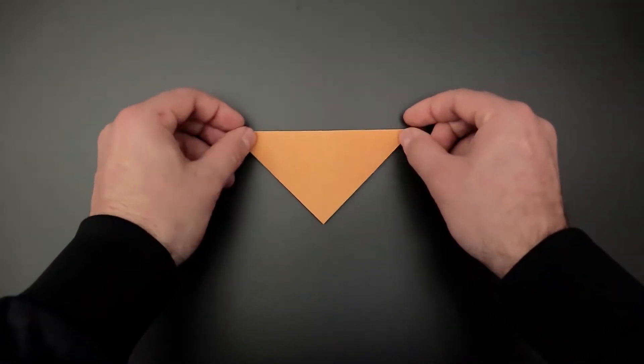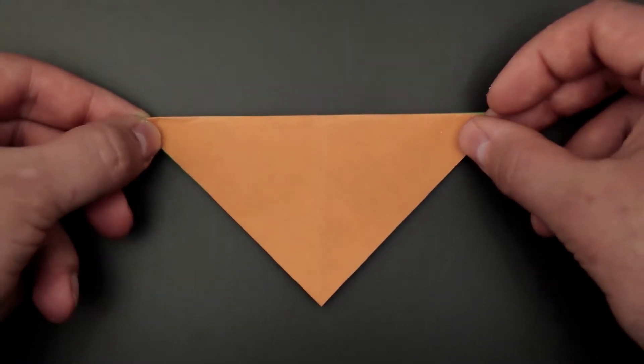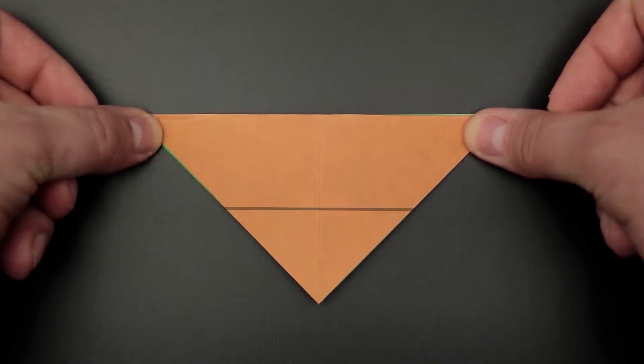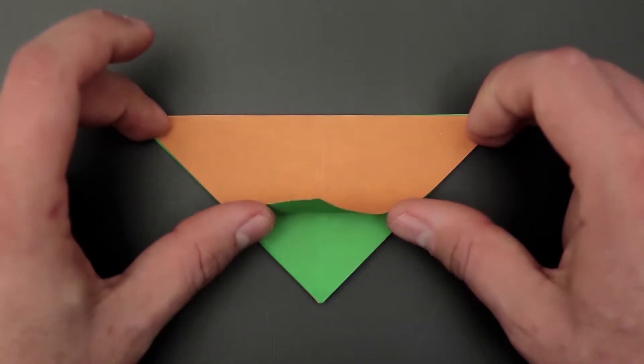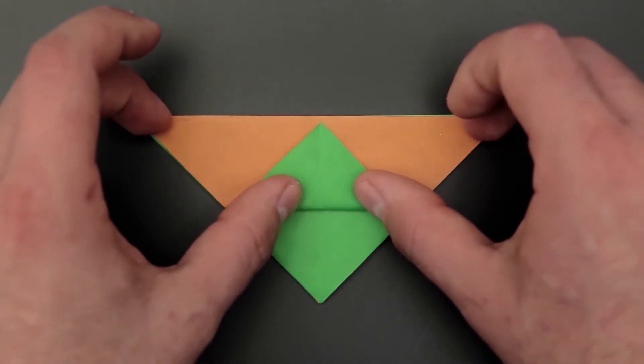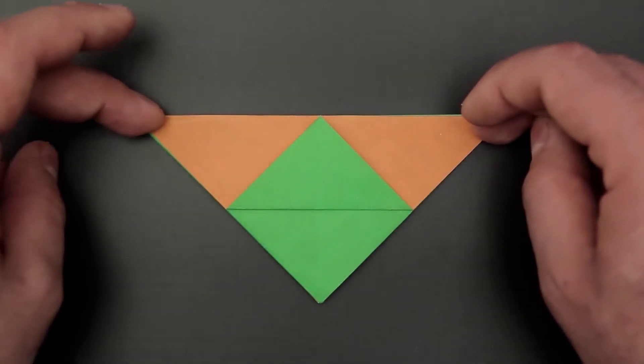Leaving the green side behind, here at the front layer, we'll have to fold the corner to the top, creating a horizontal in the middle. Mark just a little to see the line, and unfold.